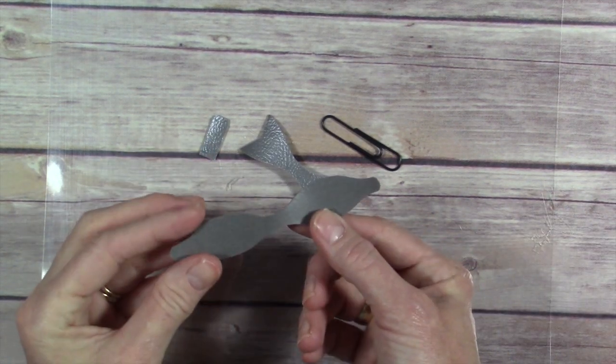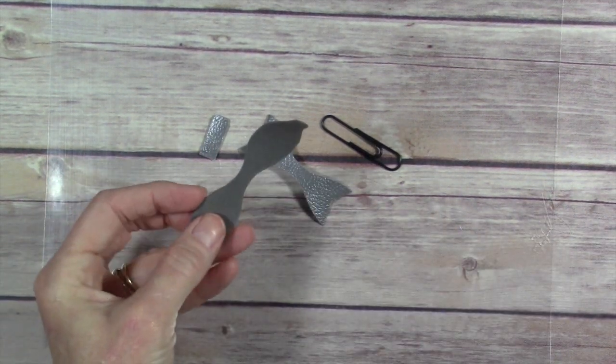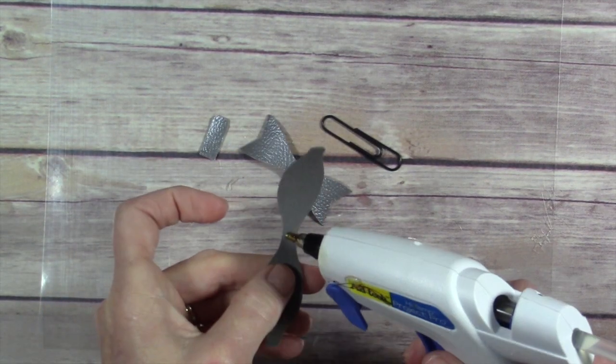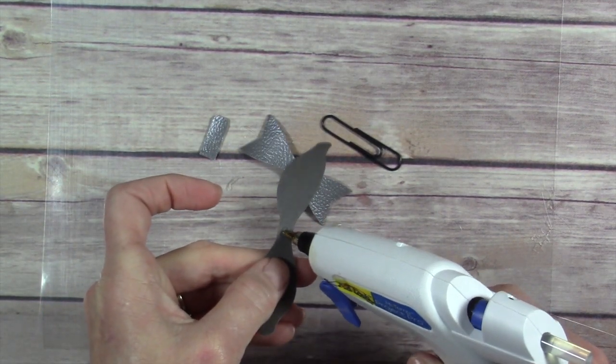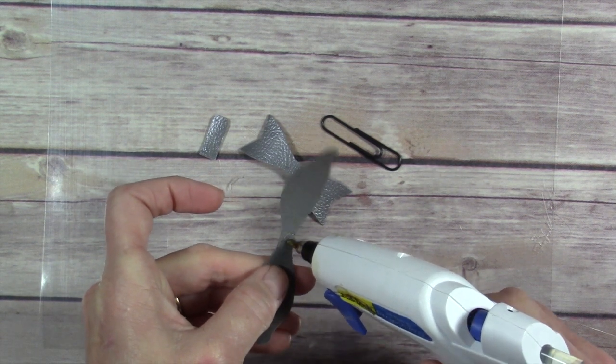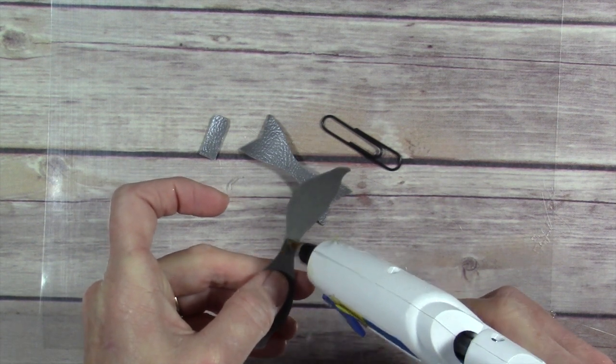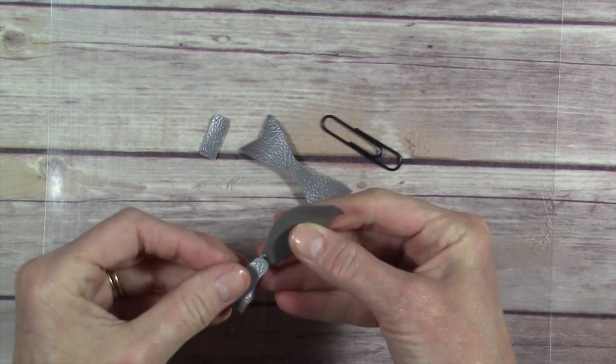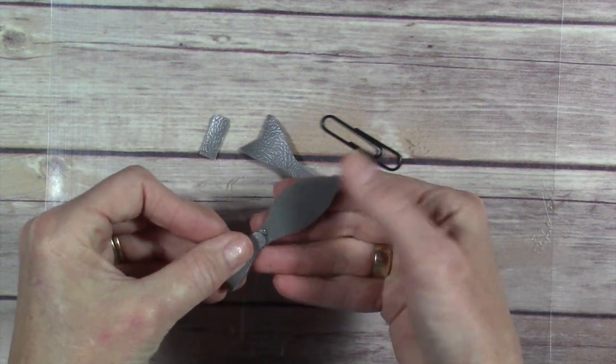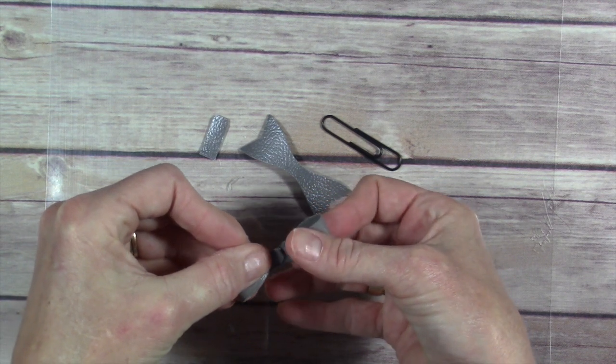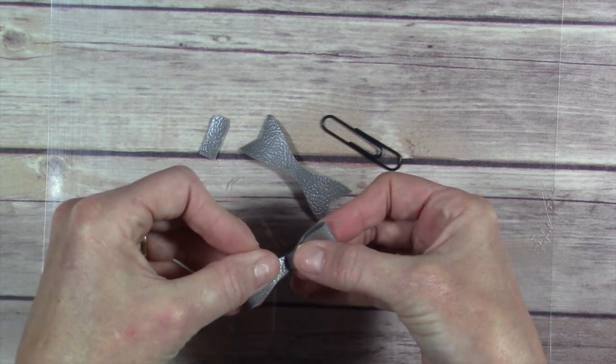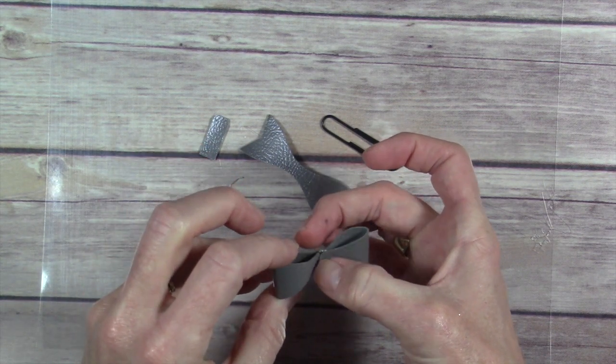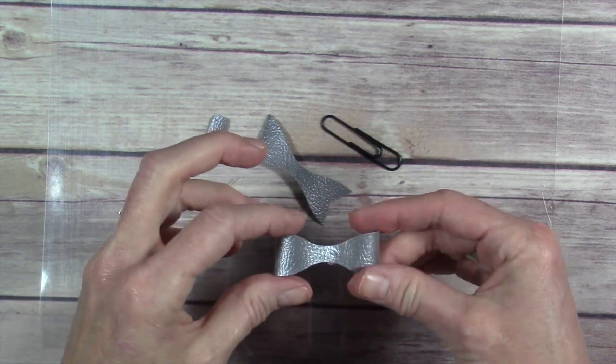This is super simple to put together. All you do is take the curved piece, the pebble side down, and you're going to put a little dollop of glue. You could also use a glue dot. I just feel a little more secure with hot glue. And you're going to fold that middle in and fold this side in. And let that stand just a second so it adheres. Perfect.